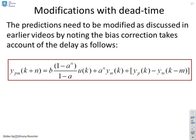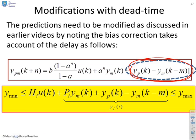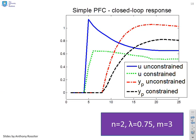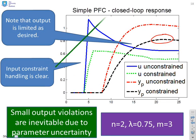Including dead time doesn't really change much — all that changes is the bias term is replaced by an updated form as discussed previously, and otherwise the algebra is exactly the same. Even with an obvious dead time in the example, output constraints and input constraints are satisfied, apart from a small violation linked to parameter uncertainty. The constraint handling works with very simple code.